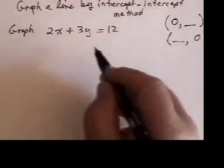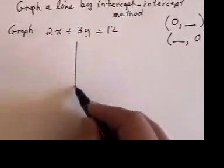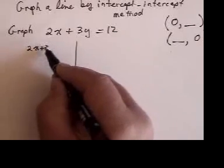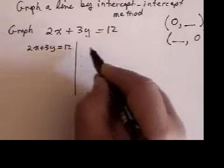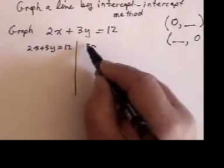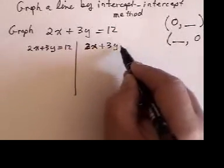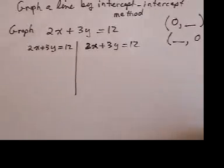So whenever I'm asked to graph something, a very easy method is write this equation on the left and then write it again on the right. 2X plus 3Y equals 12.